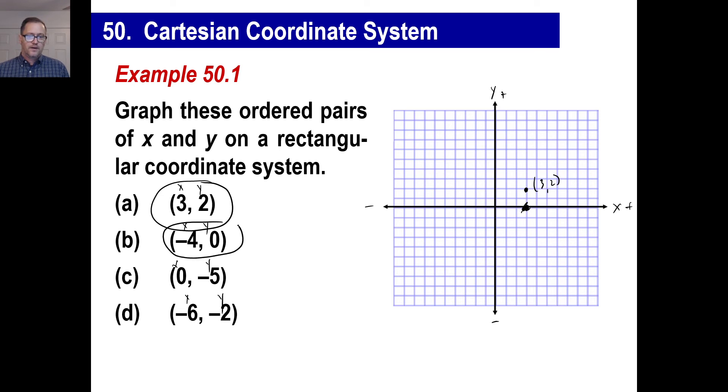All right. Negative four, zero. Again, that's an X and a Y. So I've got negative four, which means I'm going to the left four. One, two, three, four. The Y, zero, which means I'm not going anywhere. So there's my point right there. That is negative four, zero.